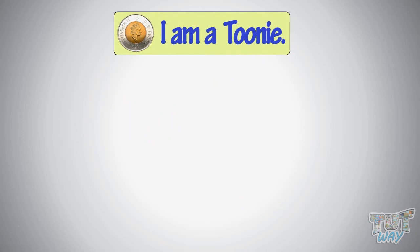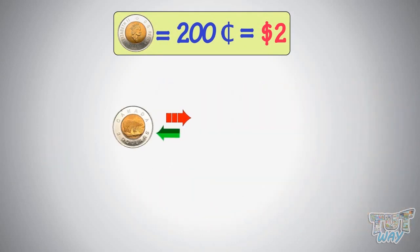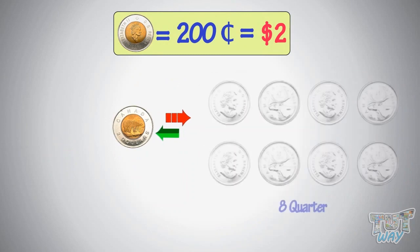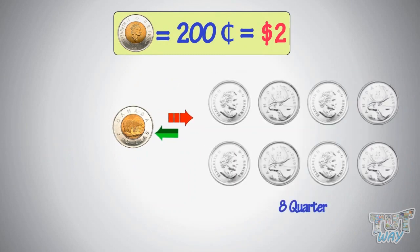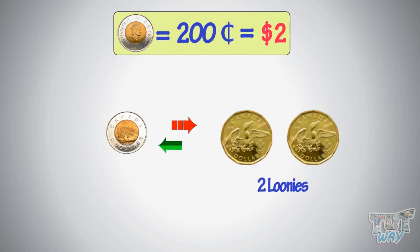I am a toonie. I am equal to 200 cents or $2. You can exchange me with smaller coins in just so many ways. You can exchange me for two loonies, too, as two loonies make one toonie.